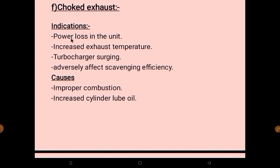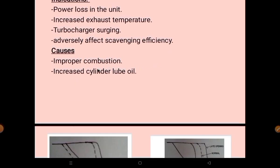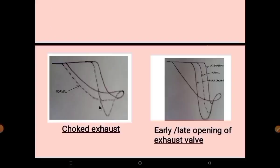The sixth irregularity is a choked exhaust. Indications include power loss in the unit, increased exhaust temperature, turbocharger surging because not enough exhaust goes to the turbocharger, and reduced scavenging efficiency. Causes are improper combustion and increased back pressure. The graphs show early or late opening of the exhaust valve — the dotted line represents normal, while the other curves show early and late exhaust valve opening respectively.